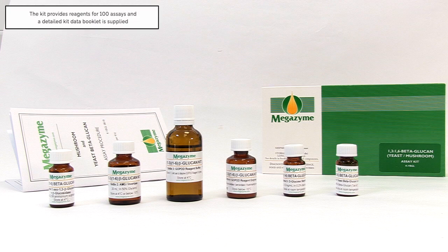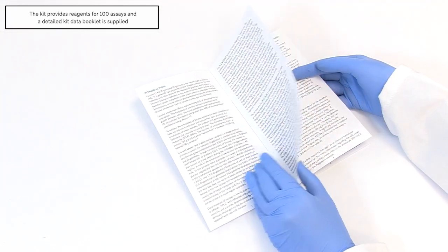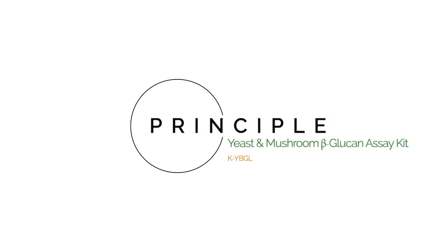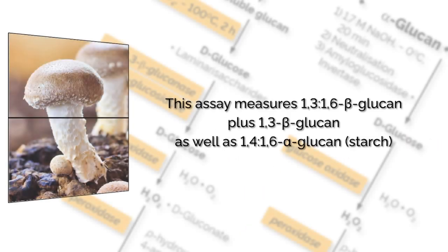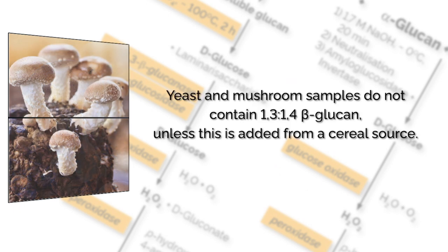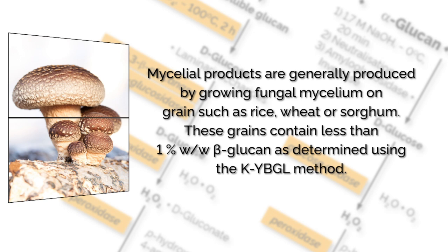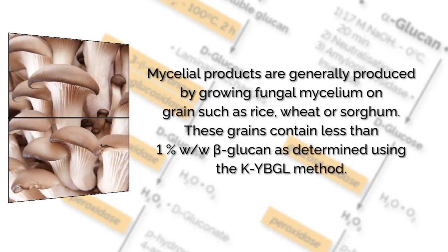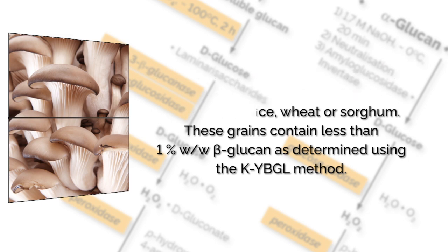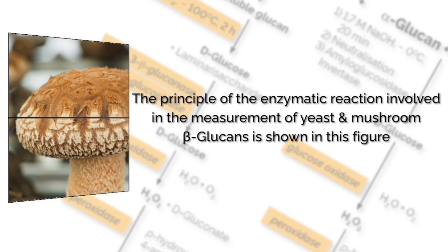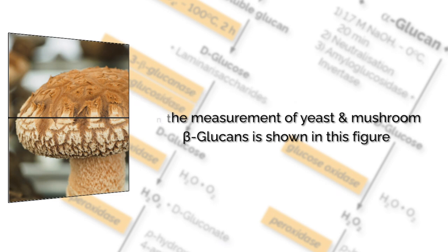The kit contains sufficient reagents for 100 assays and is supplied with a detailed data booklet. This assay measures 1,3-1,6 beta-glucan plus 1,3 beta-glucan as well as 1,4-1,6 alpha-glucan starch. Yeast and mushroom samples do not contain 1,3-1,4 beta-glucan unless added from a cereal source. Mycelial products are generally produced by growing fungal mycelium on grain such as rice, wheat or sorghum. These grains contain less than 1% weight per weight beta-glucan as determined using the KYBGL method.